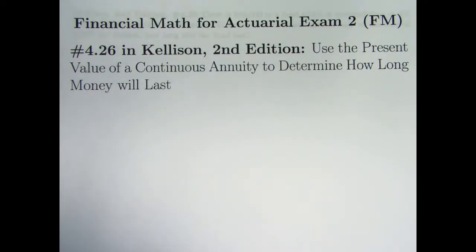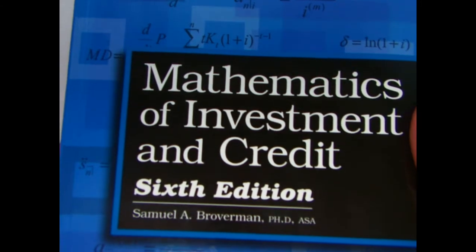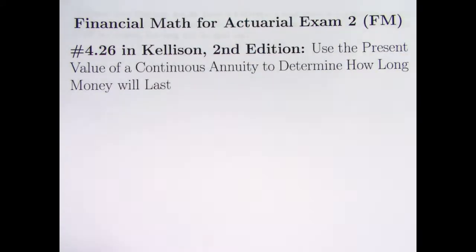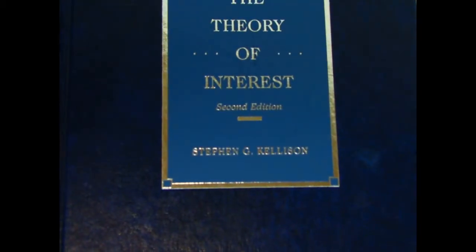Hi, this is my 44th video in helping people study for actuarial exam 2. For the first 43 videos, I've been doing problems from the Mathematics of Investment and Credit by Samuel Broverman. But for this video, I decided to change books and look at a problem from the Theory of Interest by Stephen Kellison.